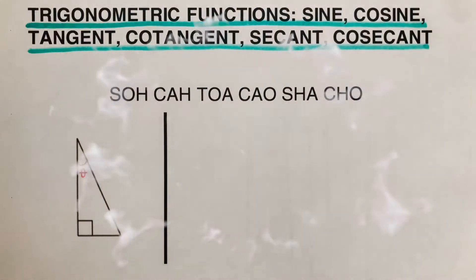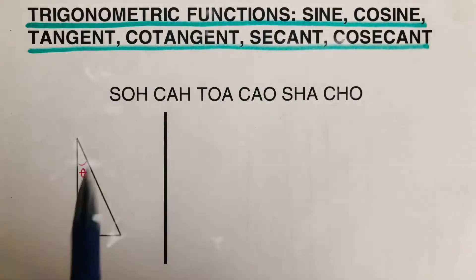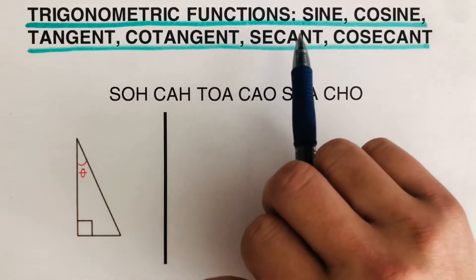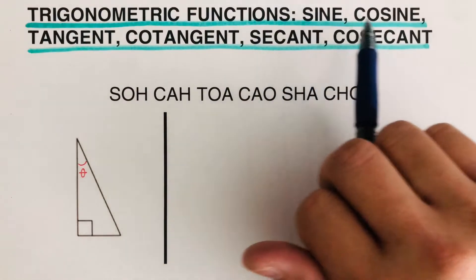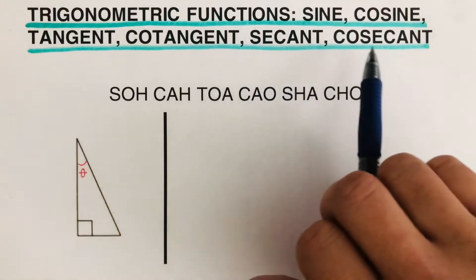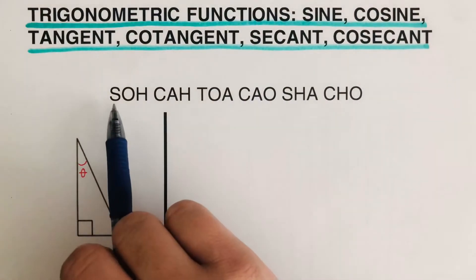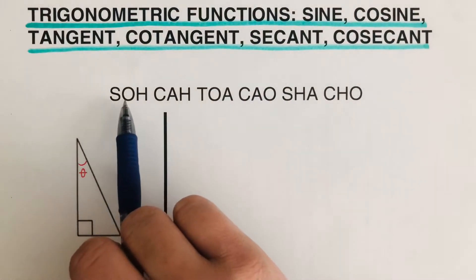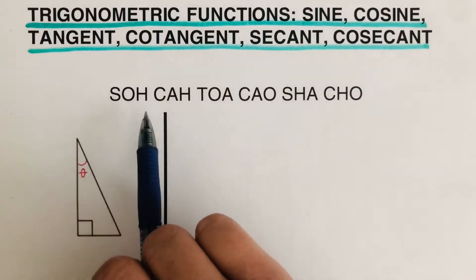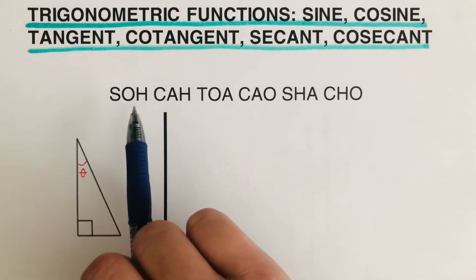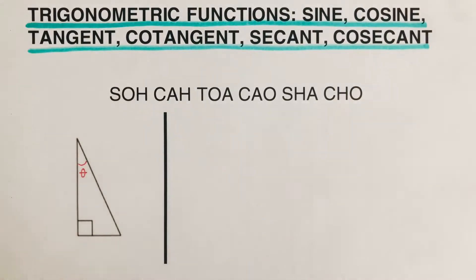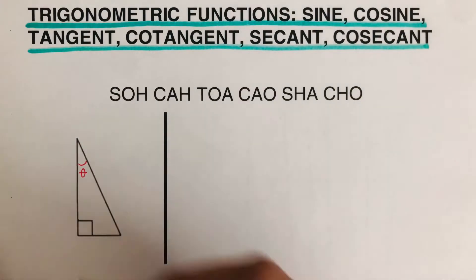Hello everyone. In this video we're going to focus on trigonometric functions, and there's going to be six of them that include sine, cosine, tangent, cotangent, secant, and cosecant. Before we jump into the acronym for these six trigonometric functions, let's identify the location of the opposite, hypotenuse, and adjacent sides in a triangle.